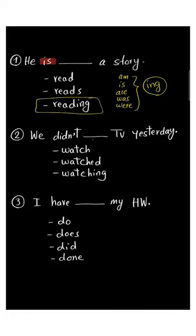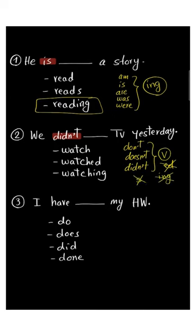We didn't blank TV yesterday: watch, watched, watching. The key here is 'didn't'. Also keep this rule: after don't, doesn't, didn't, we should choose the base verb, the original verb. No -ed, no -ing, no -s, just the verb. So we choose watch here.